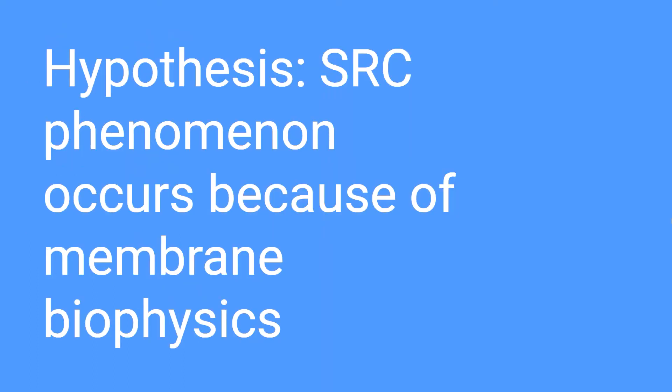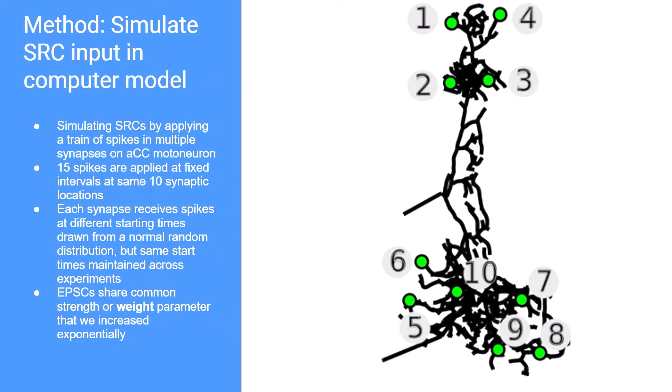We believe that the phenomenon occurs due to the biophysics of the neuron membrane. The image on the right shows the topology of the computer-simulated ACC motor neuron. The numbers on the model represent where we were simulating SRCs using a train of spikes. A fixed number of 15 spikes are sent to each of the 10 synaptic locations. Each synaptic location receives the spike at a different starting time, but the same start times were maintained across all experiments to mirror the results of Dr. Baines.